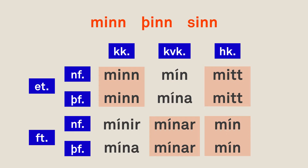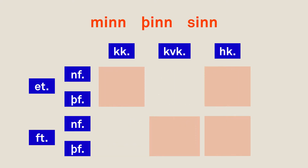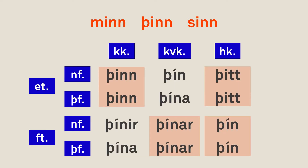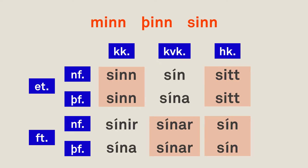What about the other two, þín and sín? Well, it's just a matter of changing the first letter — the 'm' becomes 'þ', so 'mín' becomes 'þín', 'mína' becomes 'þína', and so on. Nothing changes except the first letter. And for 'sín' we can probably guess what's going to happen — same thing, just that first letter changes and all the other forms are the same.